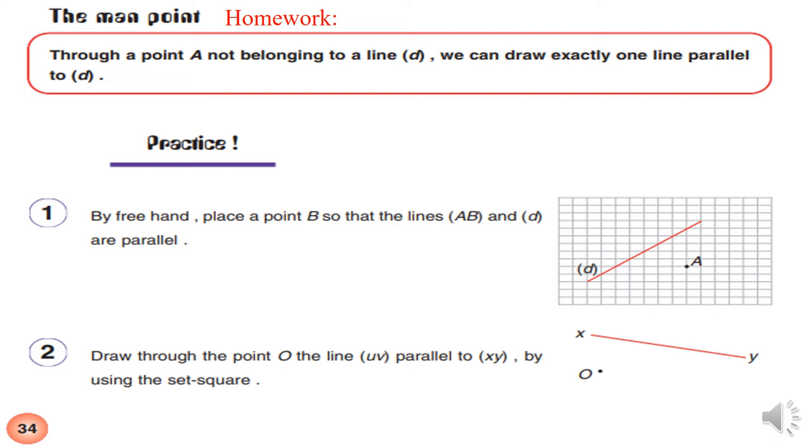Now, you have as homework to solve the practice page 34. In exercise number 1, we have by free hand without set square, okay? Place a point B so that the lines (AB) and (d) are parallel. Look at the squares here. You have to count how many squares are there. 1, 2, 3, 4, 5. Then, we have to count 5 squares like this to put the point B.